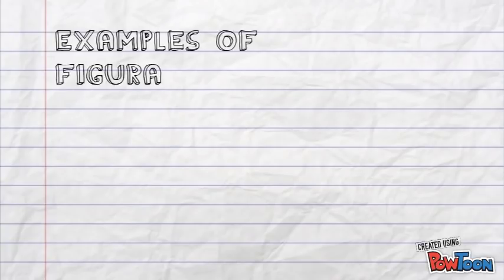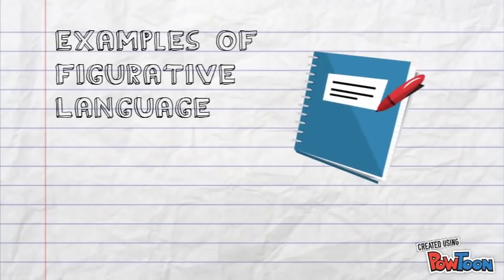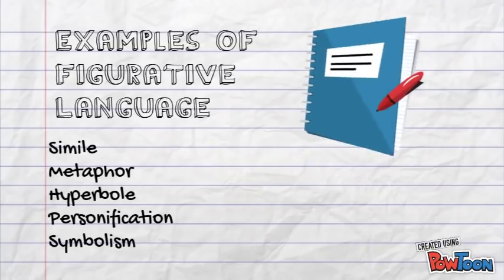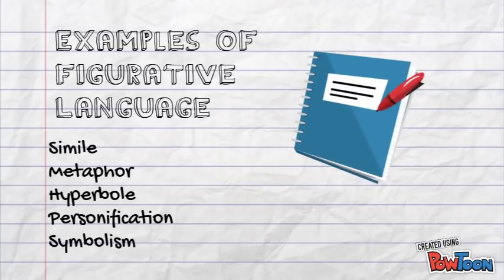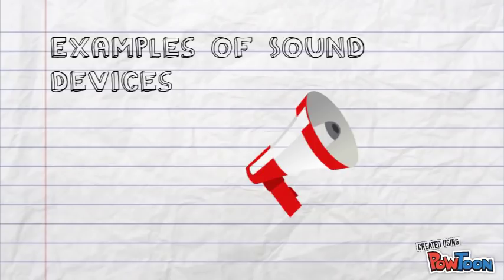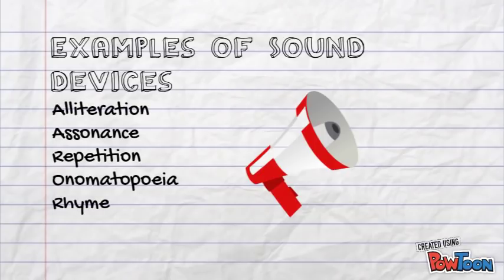There are tons of examples of figurative language that writers use. However, we've gone over five before and these are the five that we'll continue to use throughout the year: simile, metaphor, hyperbole, personification, and symbolism. In addition to the five examples of figurative language that we have learned before, you're going to add five more terms to your bank of knowledge. And these are examples of sound devices: alliteration, assonance, repetition, onomatopoeia, and rhyme.